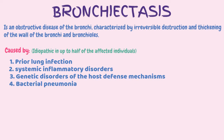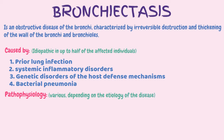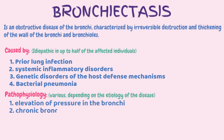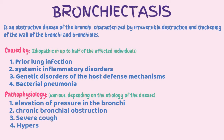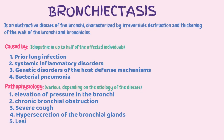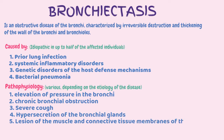The pathophysiology of bronchiectasis is not known in many cases and can vary depending on the etiology of the disease. But in general, the leading mechanisms are thought to be elevation of pressure in the bronchi, chronic bronchial obstruction, severe cough, or hypersecretion of the bronchial glands. Bronchiectasis can also be formed by lesion of muscle and connective tissue membranes of the bronchi.